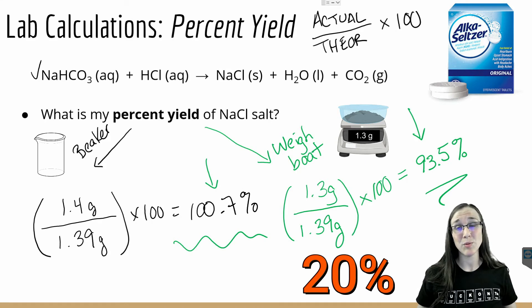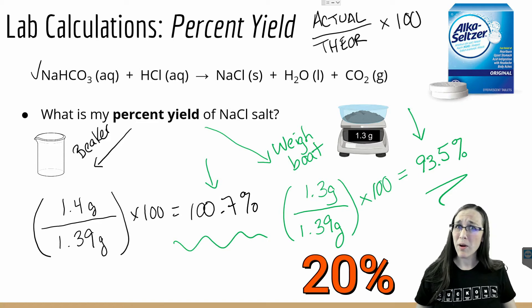So if I would have gotten, say, 20 percent yield, I'd have to go back and analyze what I did in the lab to see where I messed up and where my product went.